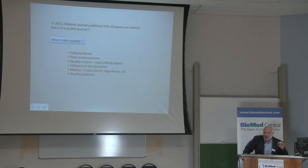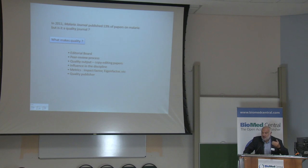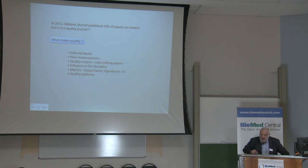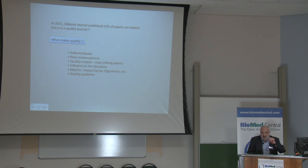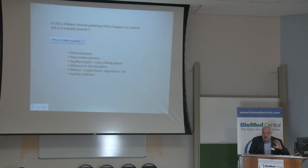I think more important is how influential we are in the discipline of malaria — what is actually written in the journal, how that comes out, and how it participates in policy making or in changes in methods of diagnostics or treatment. And I think we are doing very well. I would also put at the end the quality of publisher — that's very important. I'll come at the end of my talk to something coming up at the moment, which is important for new journals who may not necessarily choose the right kind of publisher.